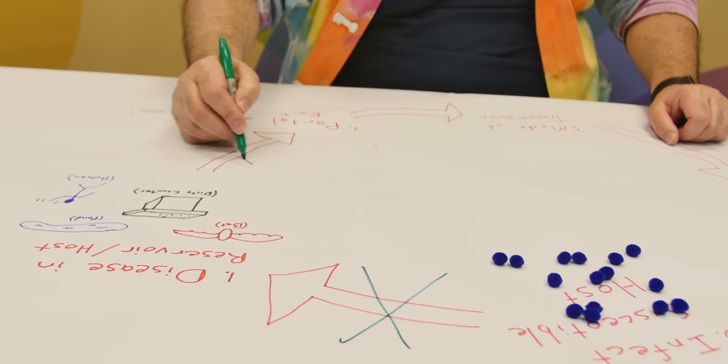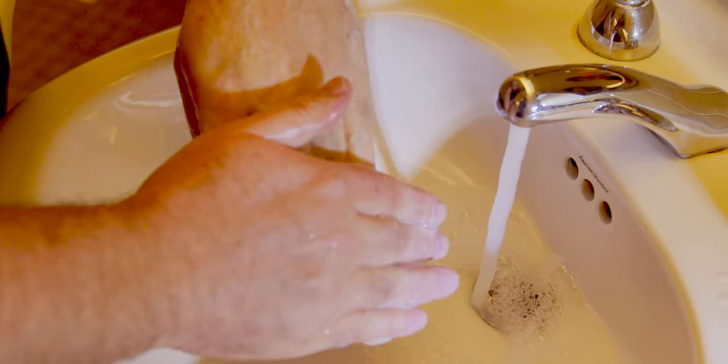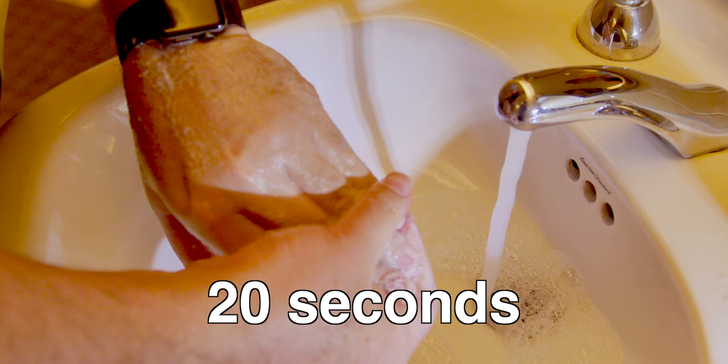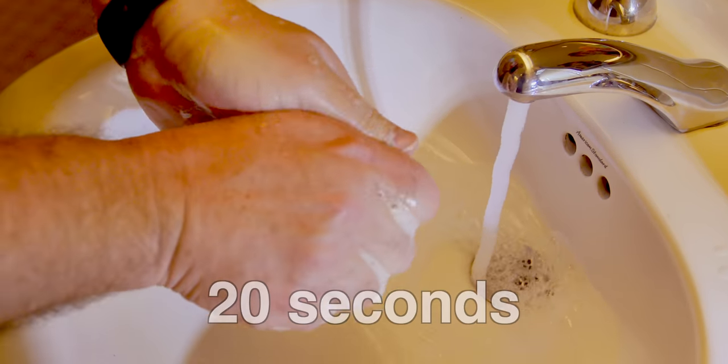Fortunately, you can stop the chain of infection. All you have to do is break one or more of the links. For example, make sure to wash your hands regularly with soap and water for at least 20 seconds to properly kill and remove germs, especially after going to the bathroom and before you eat.